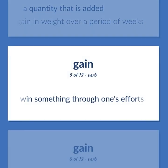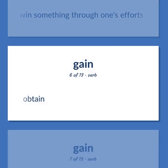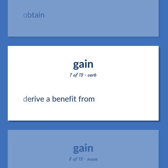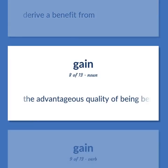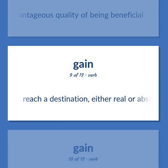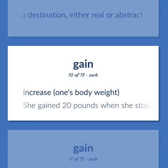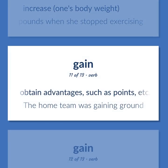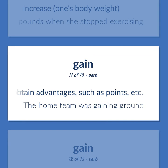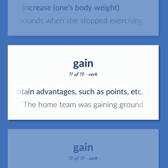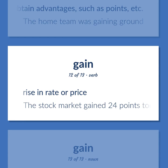Gain: Win something through one's efforts. Obtain. Derive a benefit from. The advantageous quality of being beneficial. Reach a destination, either real or abstract. Increase one's body weight. Example: She gained 20 pounds when she stopped exercising. Obtain advantages, such as points. Example: The home team was gaining ground. Rise in rate or price. Example: The stock market gained 24 points today.